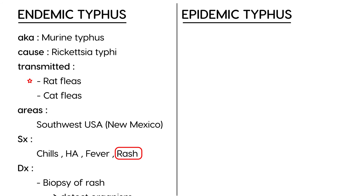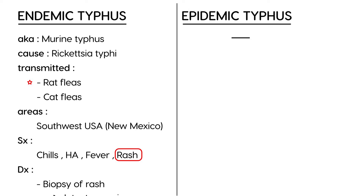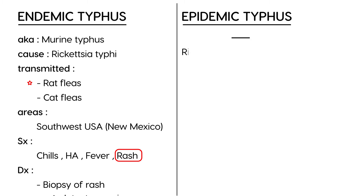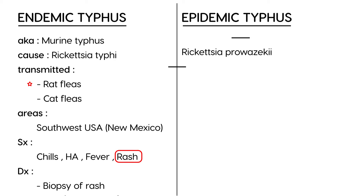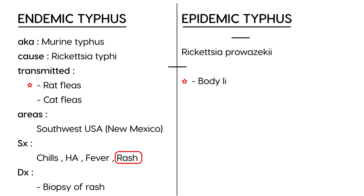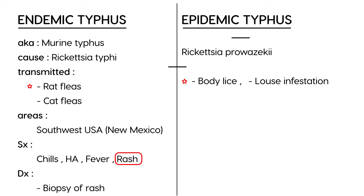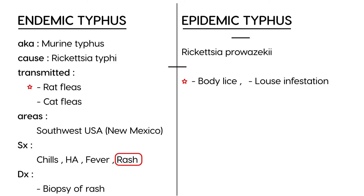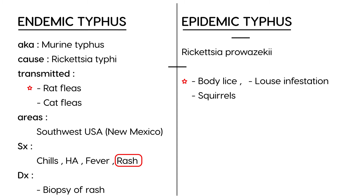Now let's compare endemic typhus to epidemic typhus. There is no other name — it's just epidemic typhus. The type of rickettsia involved is Rickettsia prowazekii. In terms of transmission, it is different: it is transmitted by body lice. A patient with louse infestation will be described. Very rarely it can also be transmitted from squirrels, but body lice is by far the most common.